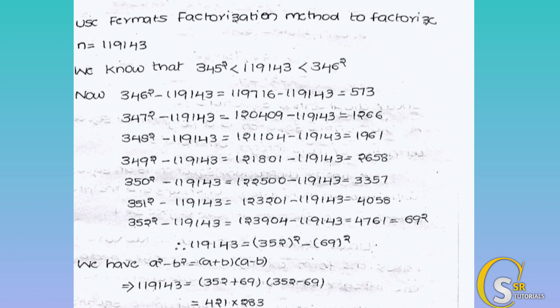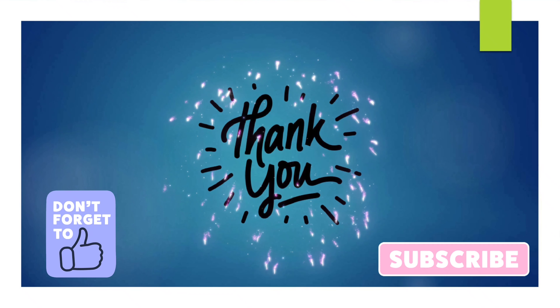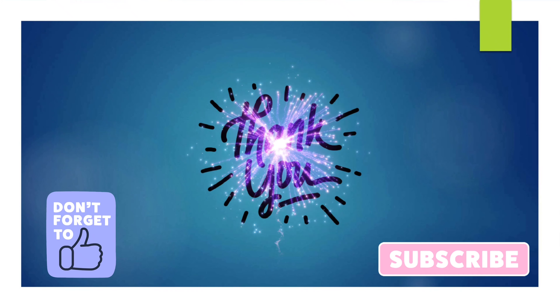Applying the identity: n equals (352 plus 69) times (352 minus 69), which equals 421 times 283. Both 421 and 283 are prime numbers, and multiplying them gives back 119143. This demonstrates how Fermat factorization can easily find the prime factors of a composite number. If you like this video, please subscribe to my channel and share it with your friends. Thank you.